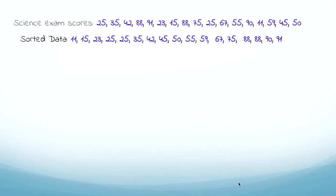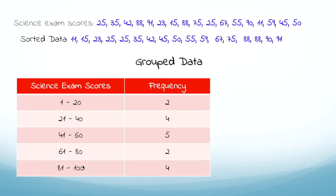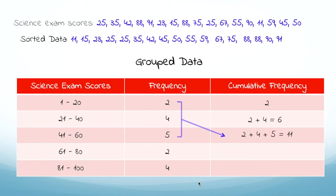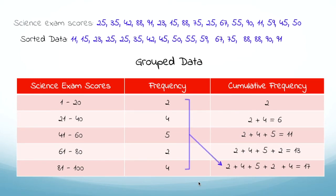Now let's look at the grouped data example for cumulative frequency. The data is sorted and placed into classes with frequencies already calculated. Since there is no value before the first class, the cumulative frequency starts at 2. Adding the next frequency: 2 plus 4 equals 6. Continuing, we get 11, 13, and 17. The procedure is the same as for ungrouped data.